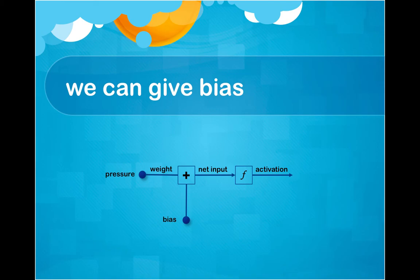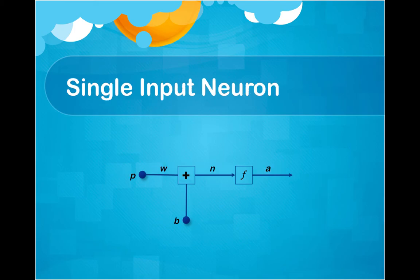With the bias, we can easily handle the activation function with our expectation. This is the single input neuron design with bias.